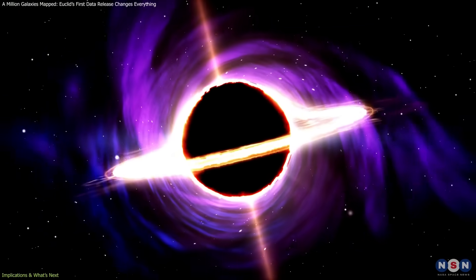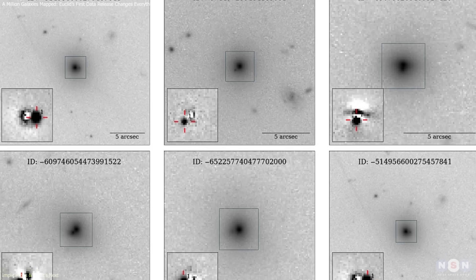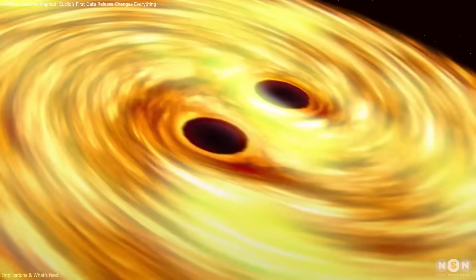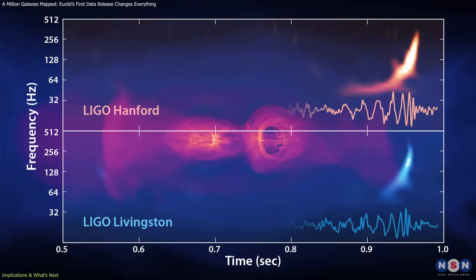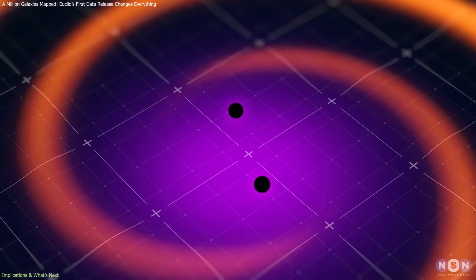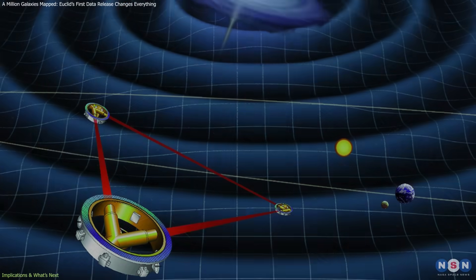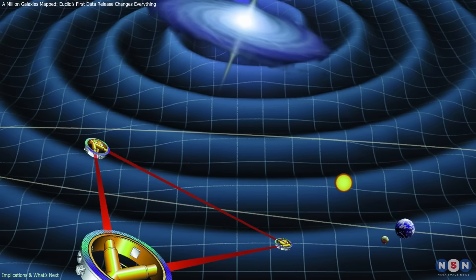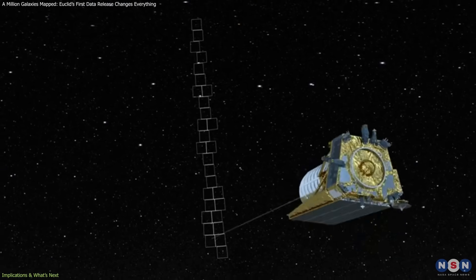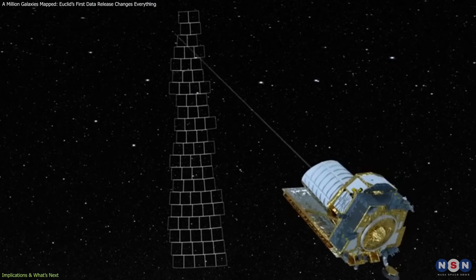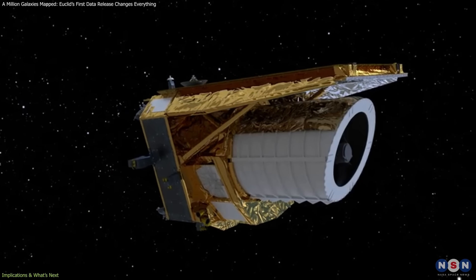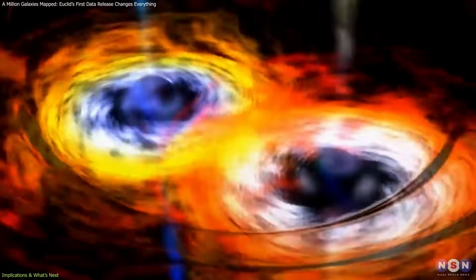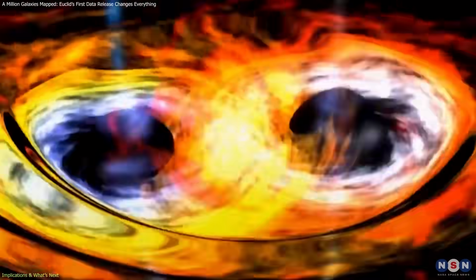For black hole research, Euclid's detection of secondary nuclei opens the door to building a large catalog of black hole merger precursors. These systems can later be compared with gravitational wave detections, helping to link electromagnetic observations with the merger signals expected from future space-based interferometers. If Euclid continues to detect secondary cores at similar rates, it will provide one of the most complete observational foundations for studying how supermassive black holes grow through mergers.